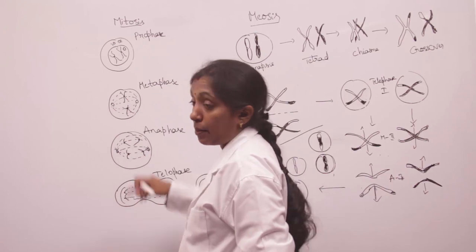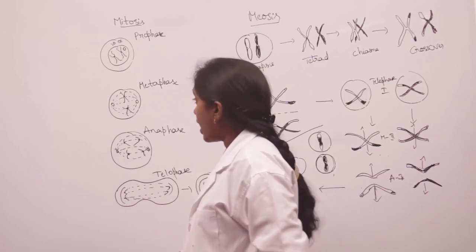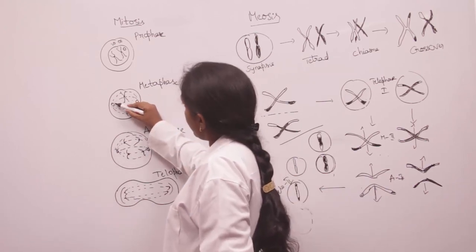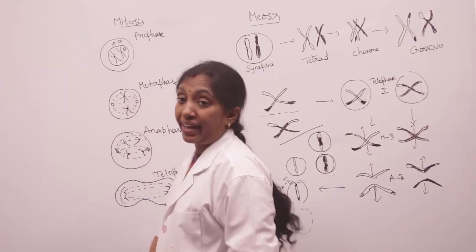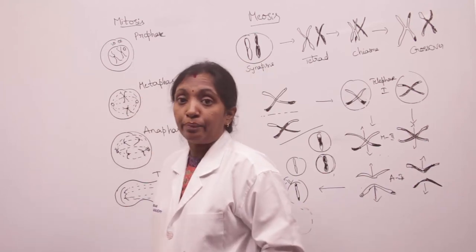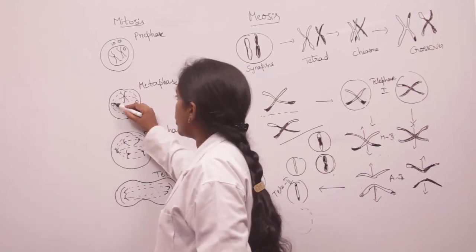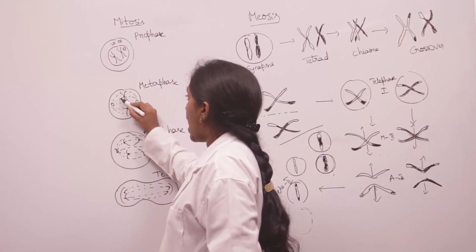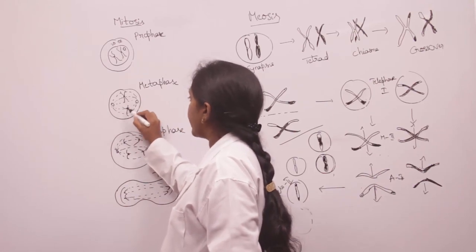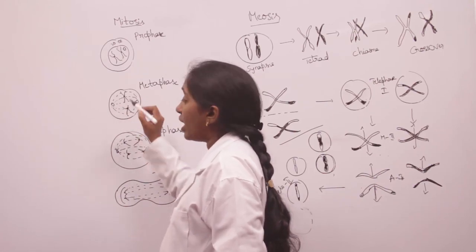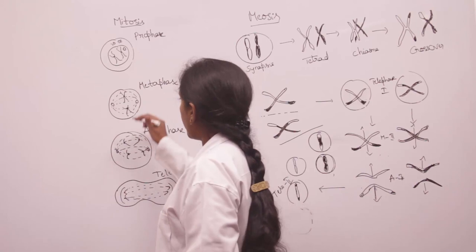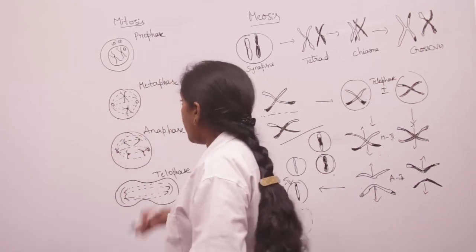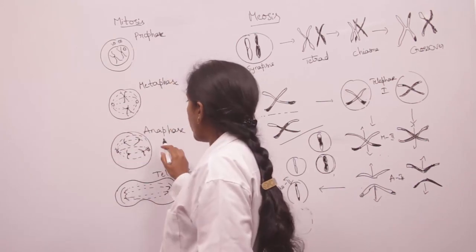In the metaphase, the centrioles reach the opposite poles and the nuclear membrane starts to disintegrate and completely disintegrates. The chromosomes lie in the metaphase plate and the centromere gets attached to the achromatic spindle.